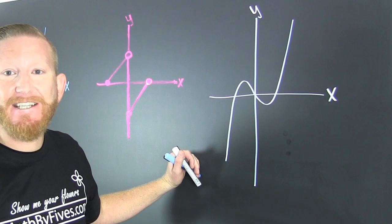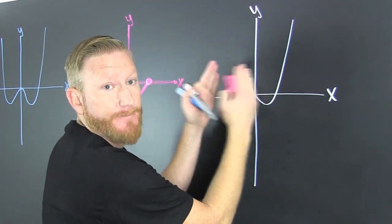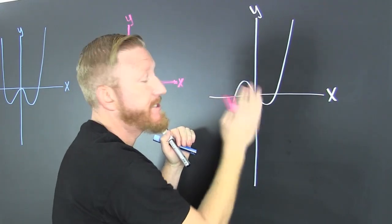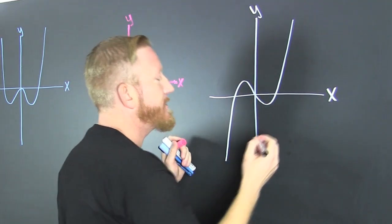Okay, so a function is even if it has y-axis symmetry. Does this have y-axis symmetry? Is it the same on the left as it is on the right? No. So this is not even.